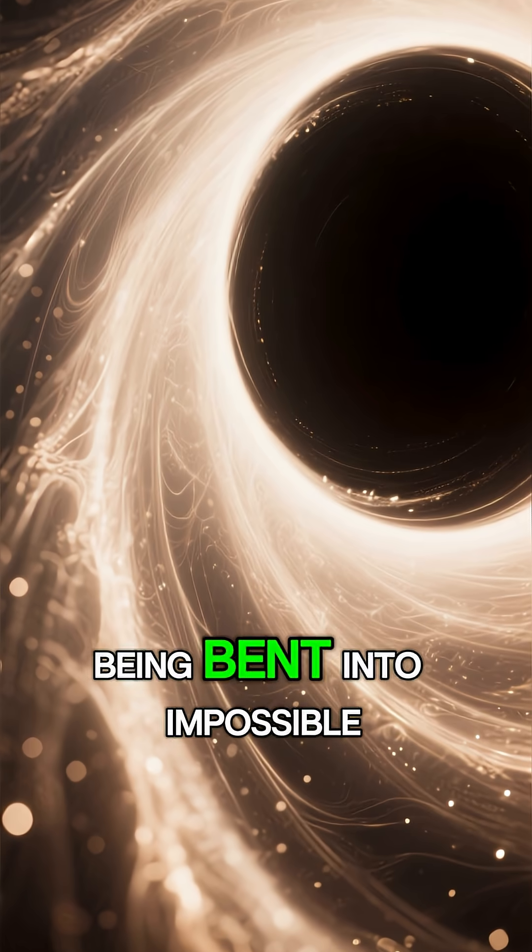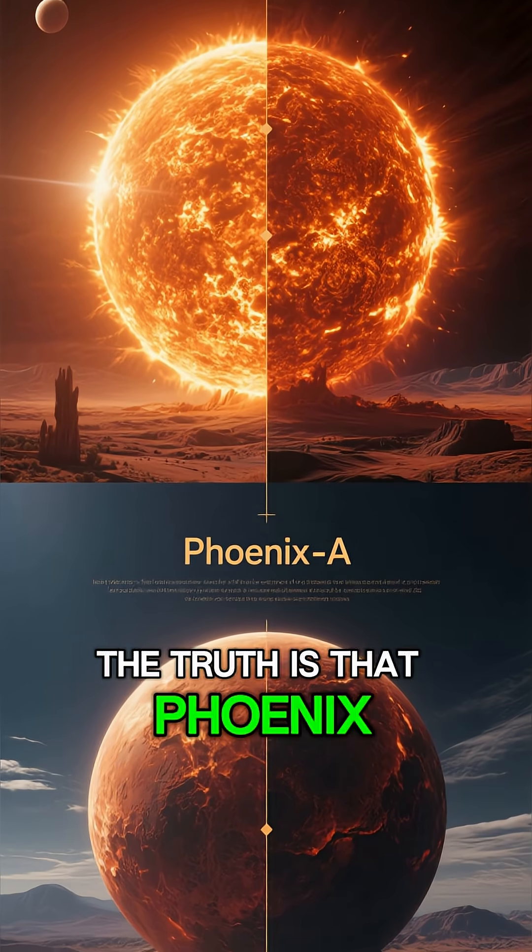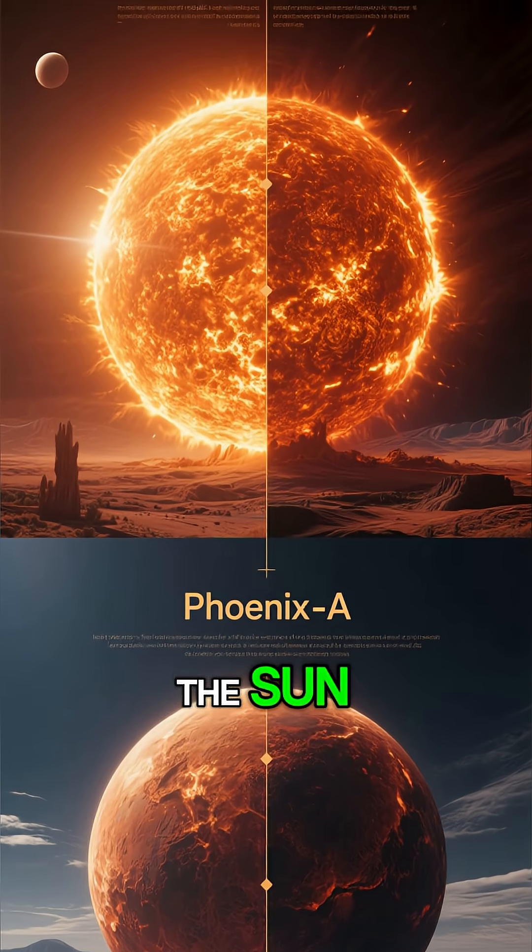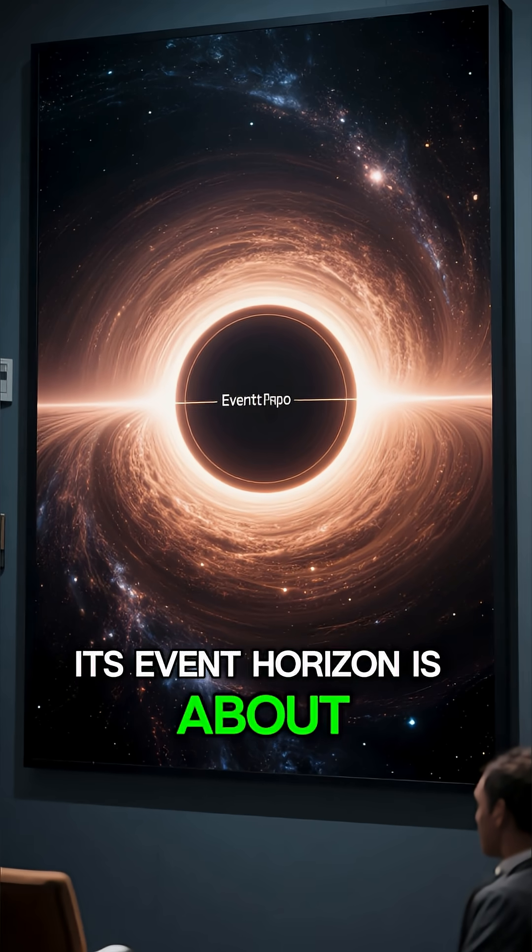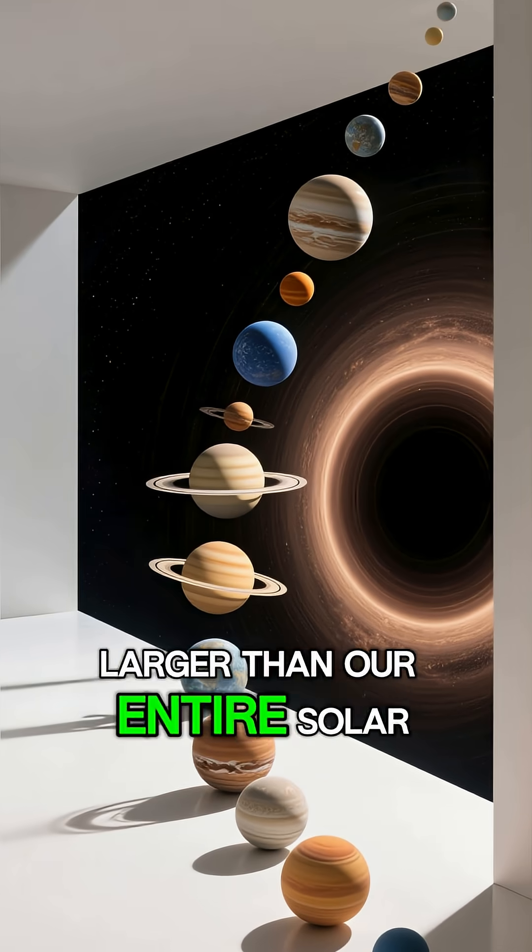Light itself being bent into impossible spirals before disappearing forever. The truth is that Phoenix A is approximately 100 billion times the mass of the sun. Its event horizon is about 590 billion kilometers in diameter, larger than our entire solar system.